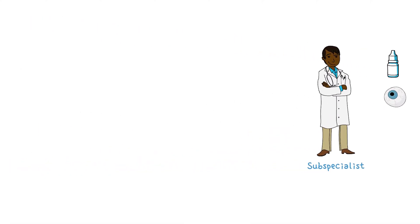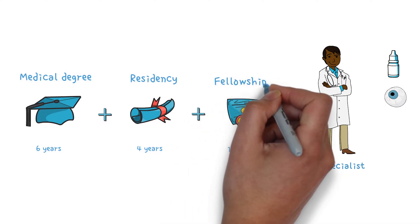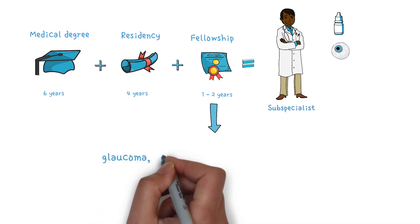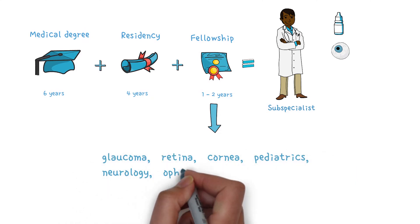The subspecialist usually undergoes one or two years of additional, more in-depth training, called fellowship, in one of the major subspecialties, such as glaucoma, retina, cornea, pediatrics, neurology, plastic surgery, or others.